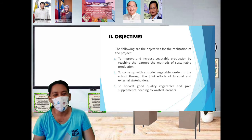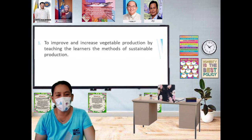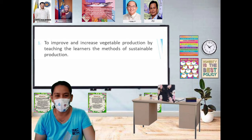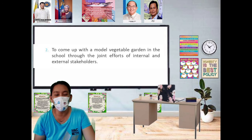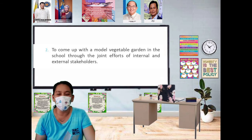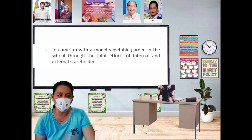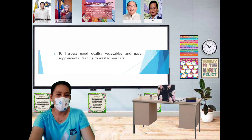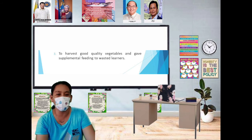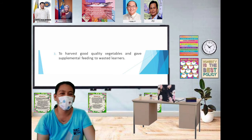The following are the objectives for the realization of this project. First, to improve and increase vegetable production by teaching learners the methods of sustainable production. Second, to come up with a model vegetable garden in the school through the joint efforts of internal and external stakeholders — this project will be done in partnership with the community to make it successful. Third, to harvest good quality vegetables and provide supplemental feeding to wasted learners, since the wasted learners are our target beneficiaries.